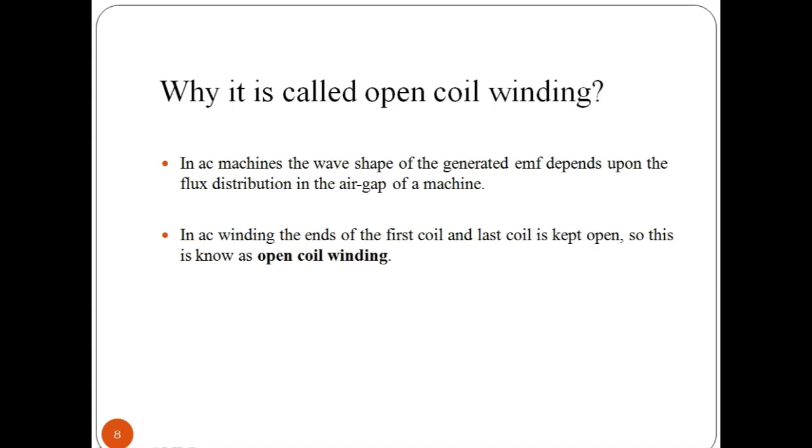AC armature winding is also called as open coil winding. In AC winding, the ends of the first coil and last or the beginning of the first coil and the ending of the last coil is kept open. So this is known as open coil winding.